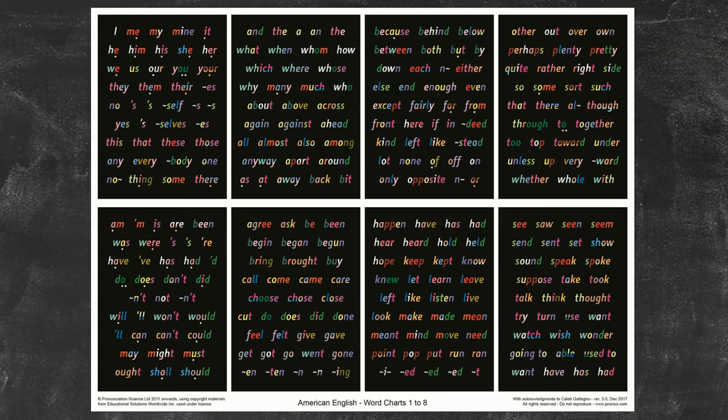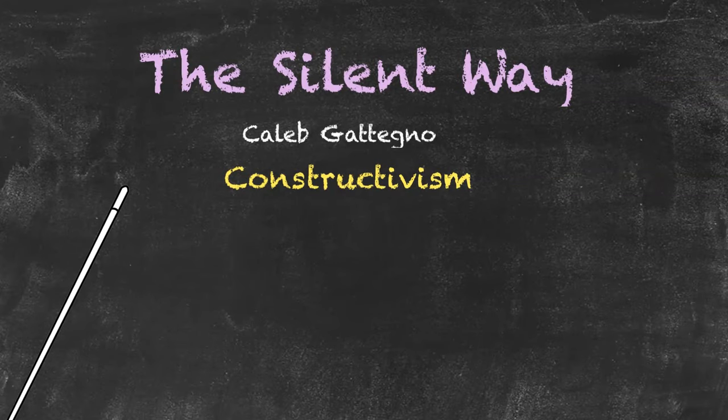One particular color may represent one particular sound, and by putting those colors out in a series he could represent the linking of those sounds into a particular word. So if you were trained in this particular method, you could use this series to develop the pronunciation of words and move on to the next level into the way in which sentences are actually constructed.